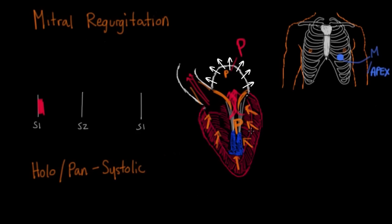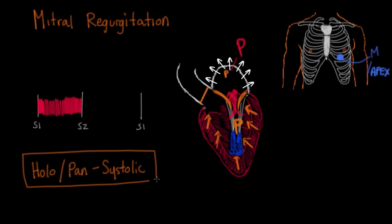Because the pressure difference between the left ventricle — which is really high, the workhorse of the body — and the left atrium — which is pretty low since it's just receiving blood from the low-pressure pulmonary system — the jets of blood coming through make a sound that to our ears doesn't change in intensity. It occurs all the way until the second heart sound when the aortic valve closes, and then a millisecond or so later the mitral valve opens again to start a new diastolic cycle. We actually call this a holo or pansystolic murmur, and it's also referred to as a flat murmur because the intensity does not change.